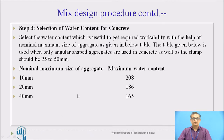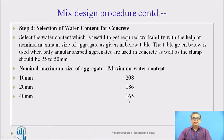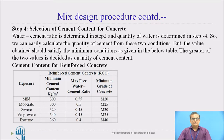Step three is selection of water content for concrete. The water content is selected by referring to a specific table. For a nominal maximum aggregate size of 10 mm, maximum water content should be 208 liters; for 20 mm it is 186 liters; and for 40 mm it is 165 liters. These code limitations must be followed to get a good mix.